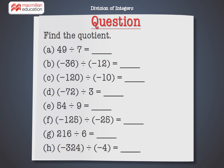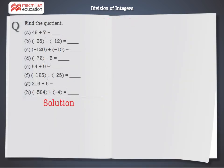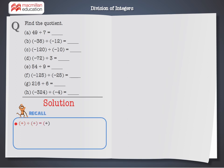Note that the divisor is a factor of the dividend, or the dividend is a multiple of the divisor. This question involves division of integers. Before proceeding to solve it, let's recall the basic rules: plus divided by plus equals plus; minus divided by minus equals plus; plus divided by minus equals minus; minus divided by plus equals minus.